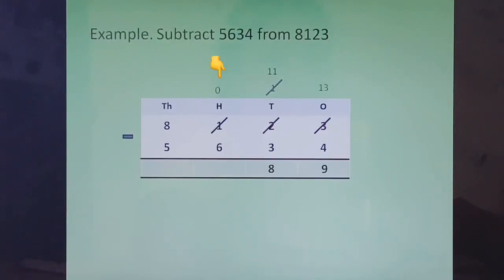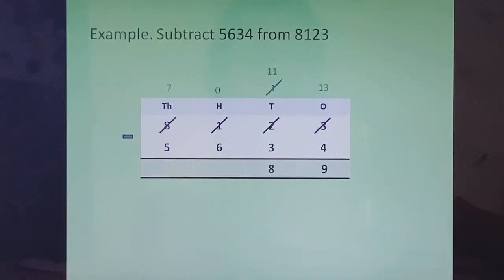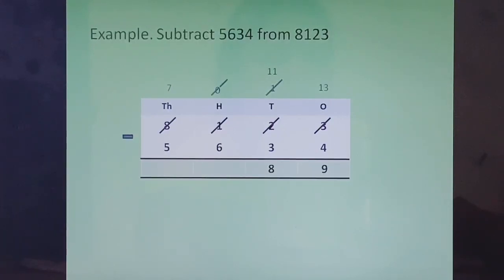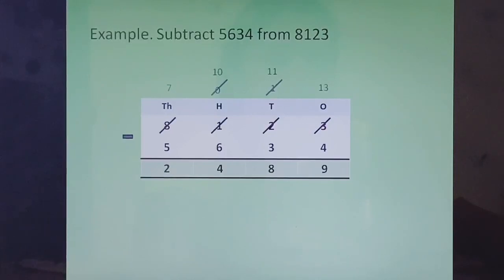Now the hundreds column. We have 0. From 0 you cannot give away 6. Again we go to the thousands column on the left and take 1 out of there. Cut 8 and write 7 on top. 1 thousand from the thousands column, when it comes to the hundreds column, becomes 10 hundreds. 10 hundreds plus 0 hundreds is 10 hundreds. So 0 cancels and becomes 10. 10 minus 6 gives us 4. Now last column, the thousands column: 7 minus 5, which is 2. So the answer is 2489.